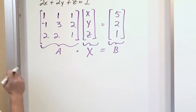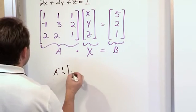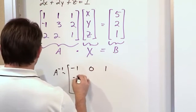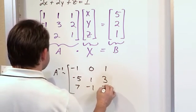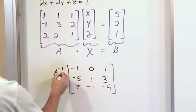So from before, we already figured out that the inverse of this matrix was negative 1, 0, 1, negative 5, 1, 3, 7, negative 1, negative 4. This is the inverse of the matrix that we found from before.